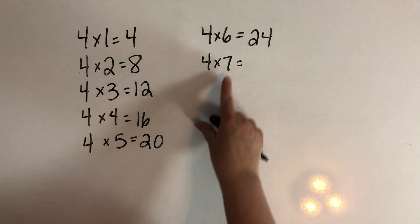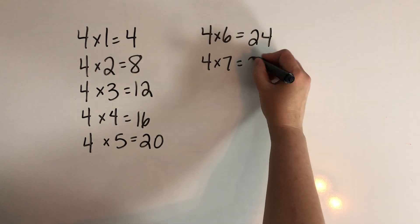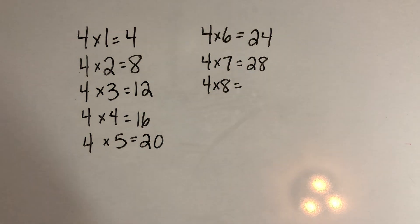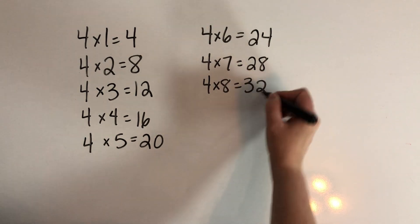Four times seven: we'll double the seven to make fourteen and double the fourteen to make twenty-eight. Four times eight: we'll double the eight to make sixteen and then we'll double the sixteen to make thirty-two.